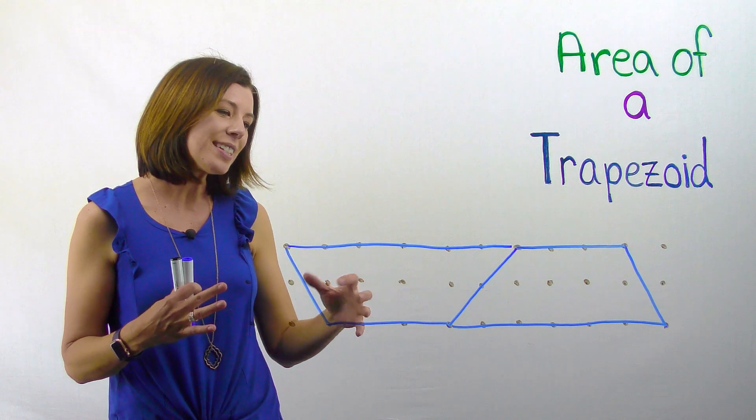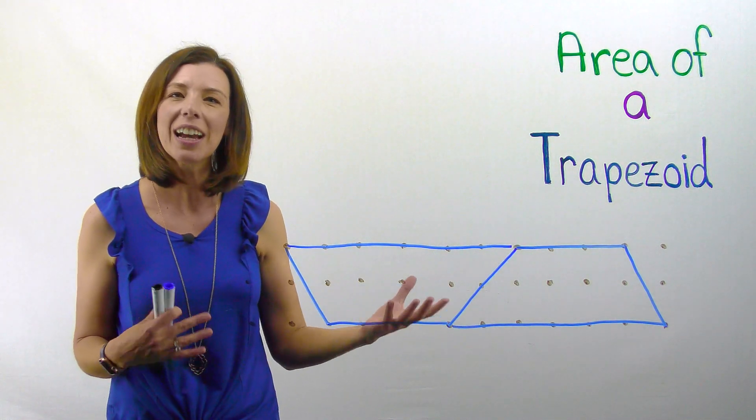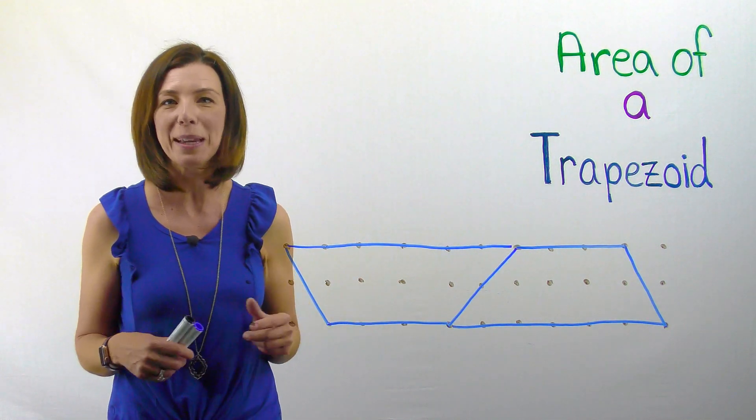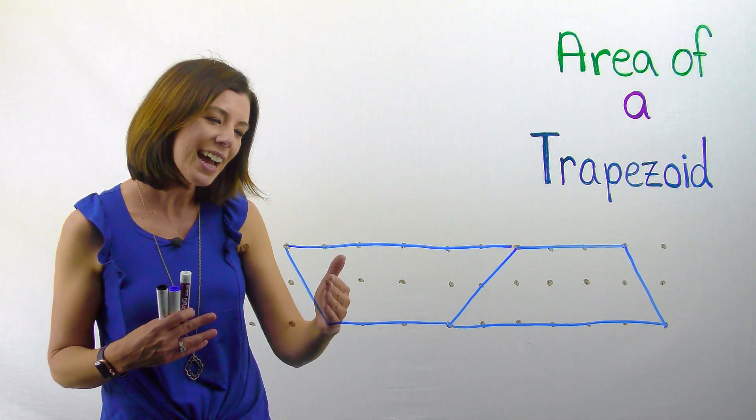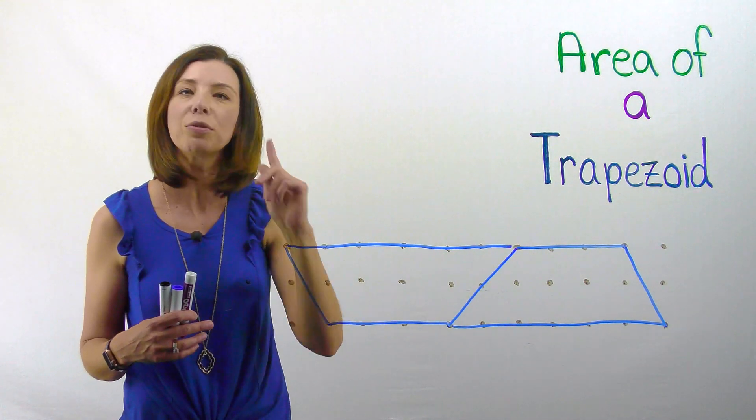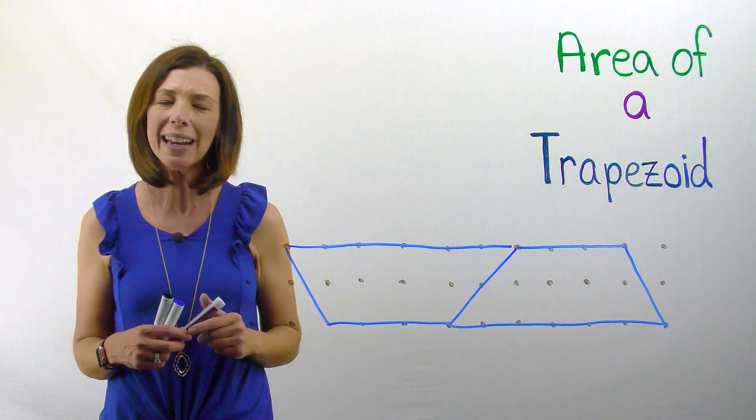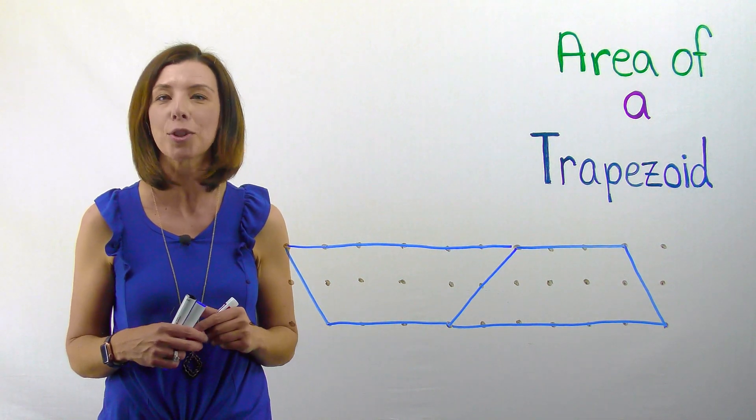Okay. So when I rotate this now, how can I find the area of this shape? Again, think back to parallelograms. If you were thinking that I can cut this triangle off and move it over, you would be correct. Go ahead and give it a try with your paper trapezoids.